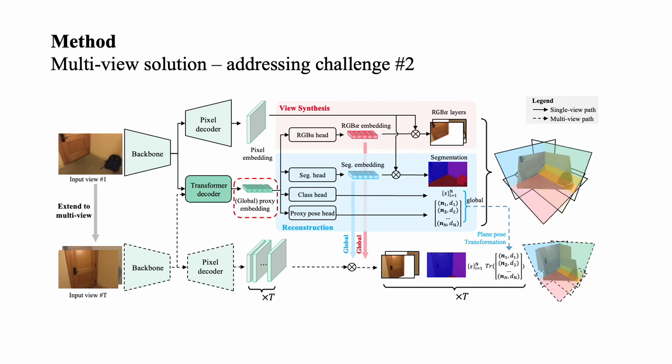Our model can manipulate both single-view and multi-view input. It aims to generate a set of proxy embeddings in the full extent of the scene, covering all planar and non-planar regions aligned in a global coordinate frame. By plane pose transformation, we can transform the estimated global plane pose into each input view. In this way, the predicted proxy instances are directly aligned, which avoids the sophisticated matching in two-stage methods.